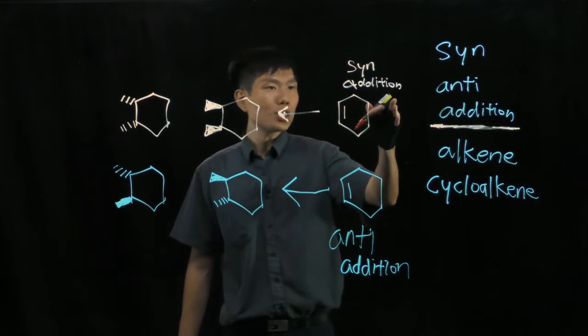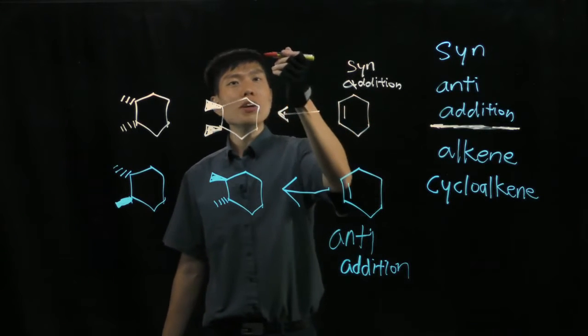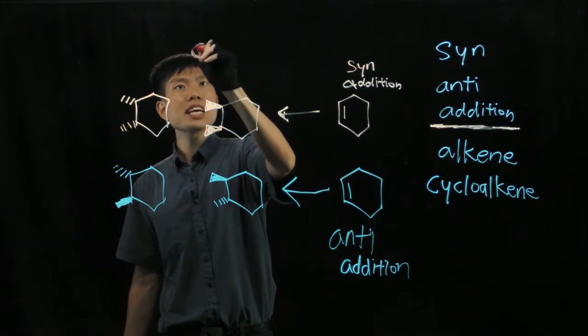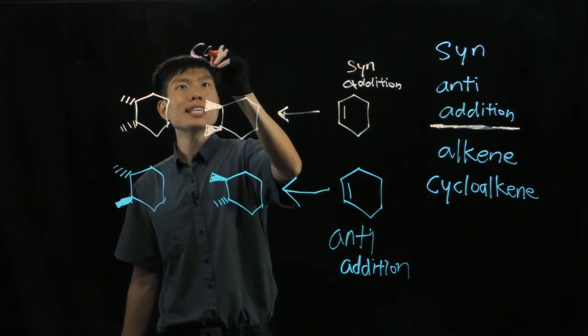So what are the examples of syn addition that you ought to know? One of them is the catalytic hydrogenation using a platinum catalyst or nickel catalyst.